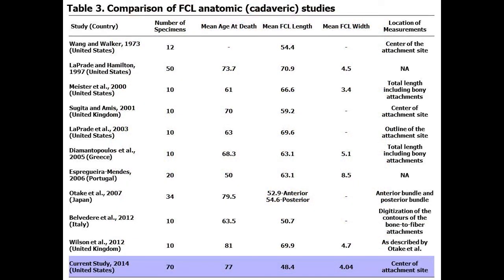Based on our literature search, we found 10 published cadaveric studies on the morphology of the Fibular Collateral Ligament, representing a total of 176 ligaments. This review revealed that only 20% of cadaveric Fibular Collateral Ligament morphology studies reported variations similar to the ones we found in our study.